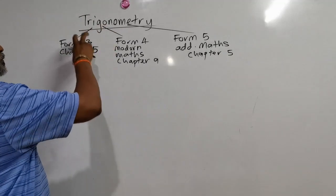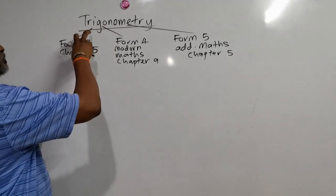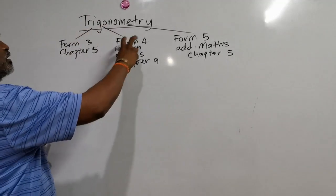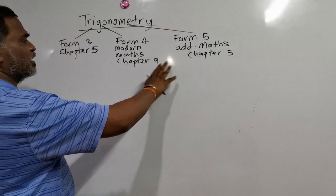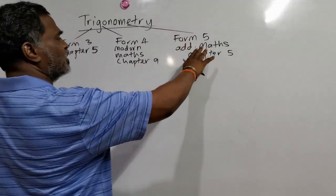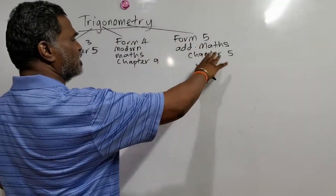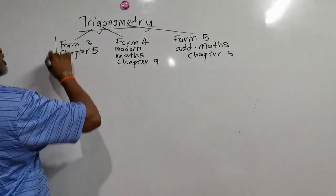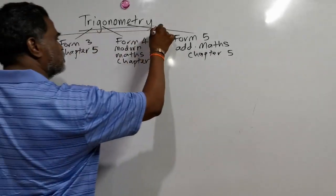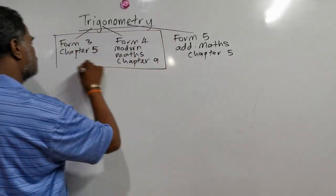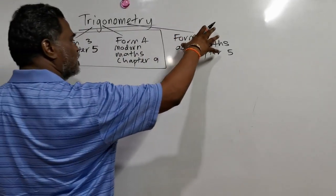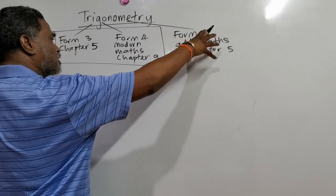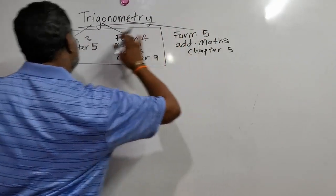Trigonometry. You learn trigonometry in Form 3 Chapter 5, Form 4 Modern Math Chapter 9, and Form 5 Additional Math Chapter 5. Today I am more focused on Form 3 and Form 4 Modern Math. After that I will teach you the Additional Math part.